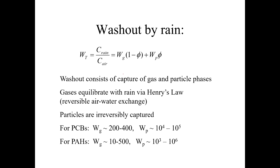Particles get removed from the atmosphere when they get washed out by rain. We have a scavenging coefficient W_T, which is the concentration of the chemical in the rain divided by the concentration in the air — total amount in air and water without distinguishing phase. We can divide that into a scavenging coefficient for particles (W_P) and for the gas phase (W_G). Phi is the fraction of the chemical in the particle phase, so W_P is multiplied by phi and W_G by 1 minus phi.